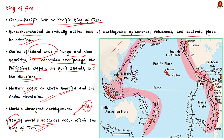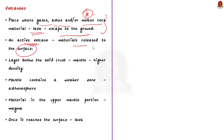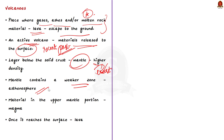Now let us see some details about volcanoes from a prelims point of view. First of all, what is a volcano? A volcano is a place where gases, ashes or molten rock material — lava — escape to the ground. A volcano is called an active volcano if the materials mentioned are being released or have been released in the recent past. The layer below the solid crust is called the mantle and it has a higher density than that of the crust. The mantle contains a weaker zone called the asthenosphere. It is from this that molten rock material finds its way to the surface. The material in the upper mantle portion is called magma and once it starts moving towards the crust or the surface, it is referred to as lava.